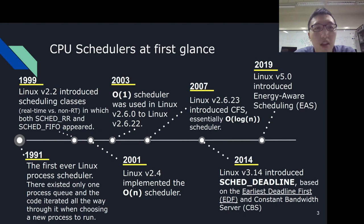This is the development timeline of CPU schedulers. In year 1991, the first ever Linux process scheduler came along with the initial release of the Linux kernel. Moving forward to 1999, Linux version 2.2 introduced scheduling classes, in which both SCHED_RR and SCHED_FIFO appeared. Next, in 2001, Linux version 2.4 implemented the O(N) scheduler. Moving forward to 2003, the O(1) scheduler was introduced, which lived in the kernel for circa 4 years.